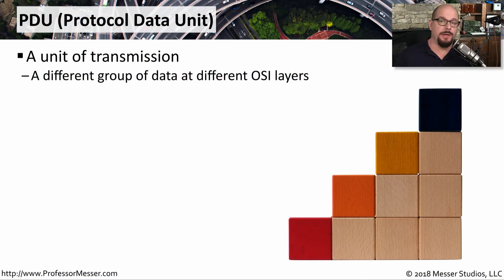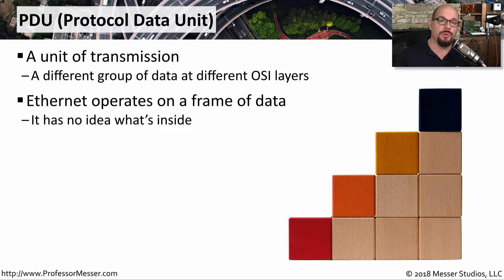A protocol data unit, or a PDU, is a unit of information that is sent by a protocol at a particular OSI layer. For example, a switch is going to operate on the ethernet PDU. That protocol data unit is the most important thing so that the switch knows where to forward that frame.